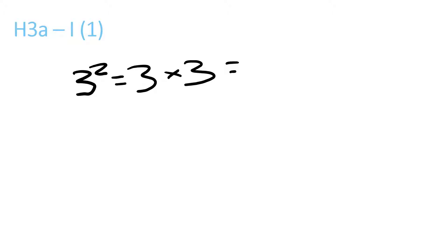As you can see here, 3 with the little 2 up there — that means 3 times itself twice, so 3 times 3. So, 3 times 3 equals 9.